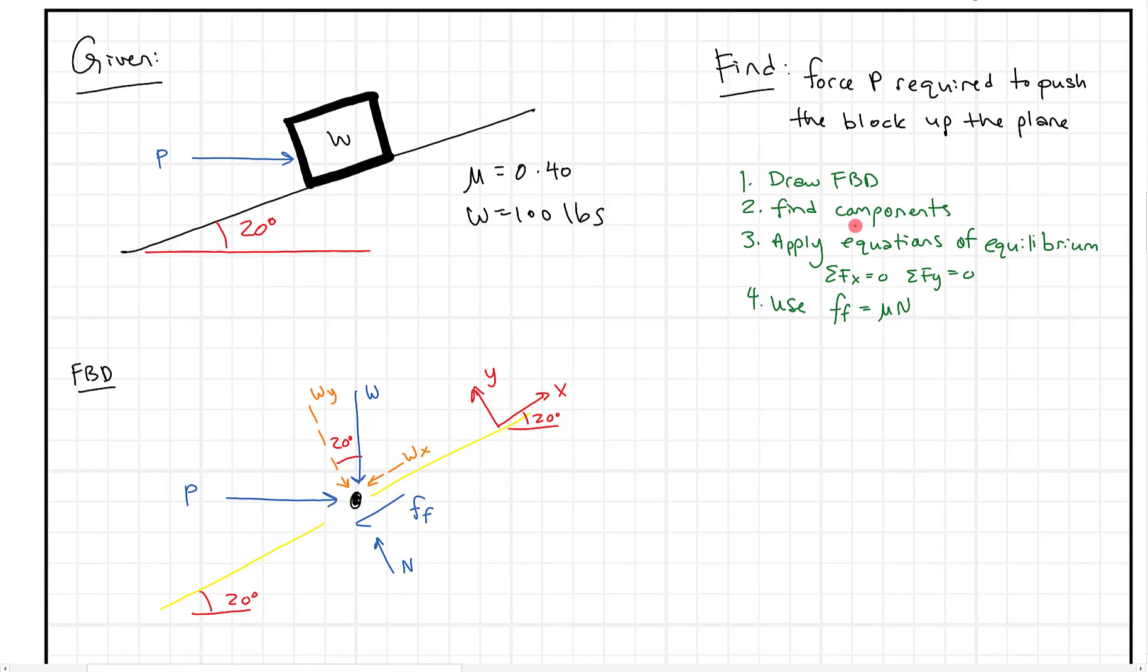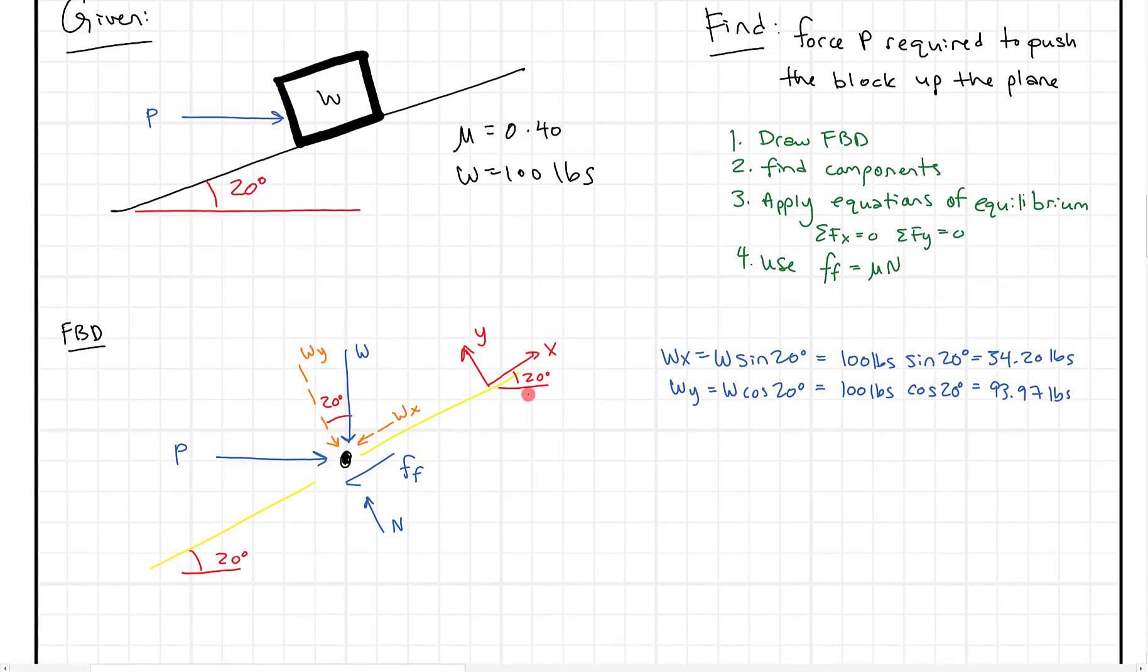So in this case, now when we go to find components, we can already find WX and WY. We already have those. So if you want to know how to do those, maybe go watch the first video. But I'm just going to copy those down here. Alright, so here we have WX, with WX is W, this total weight here, times the sine of 20. So we're doing vector components again. And WY is W times the cosine of 20.